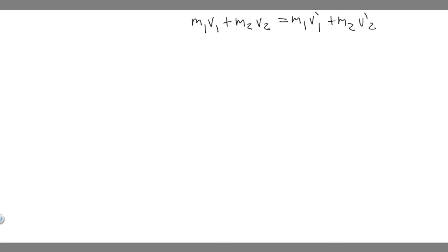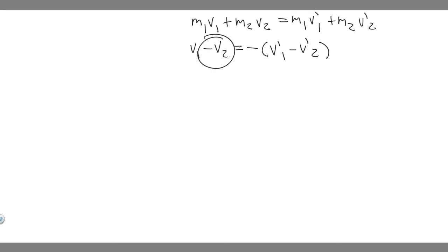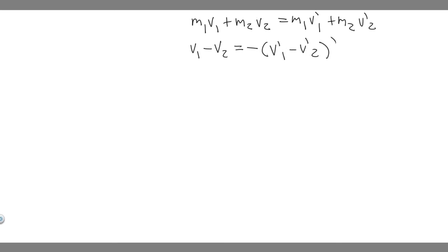We're going to need two equations to solve this. The second equation is: v₁ - v₂ = -(v'₁ - v'₂). So the initial velocity of your first object minus the velocity of your second object equals negative of the quantity: the final velocity of your first object minus the final velocity of your second object.